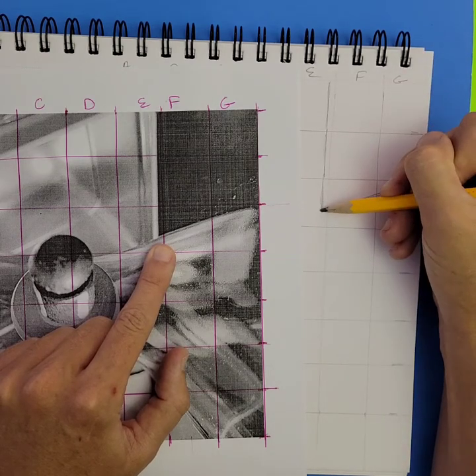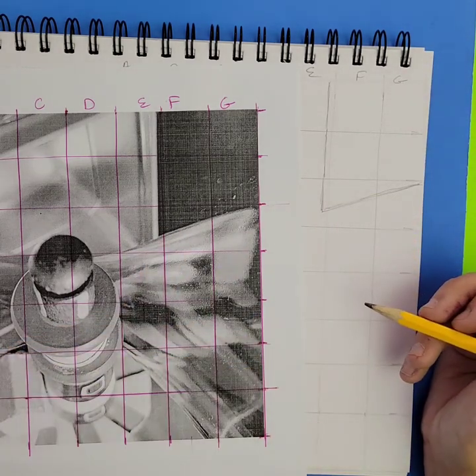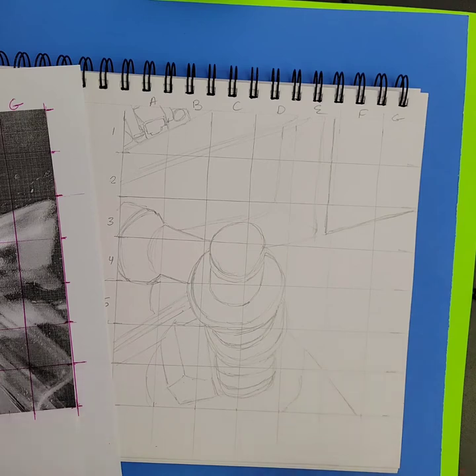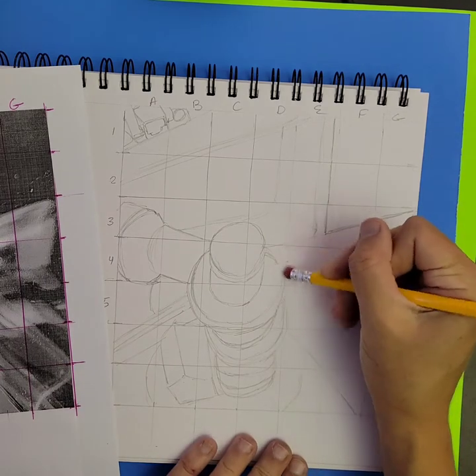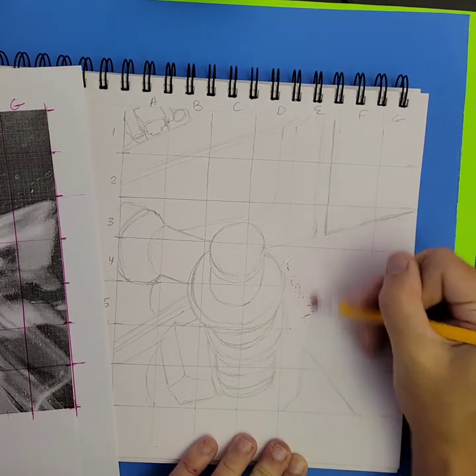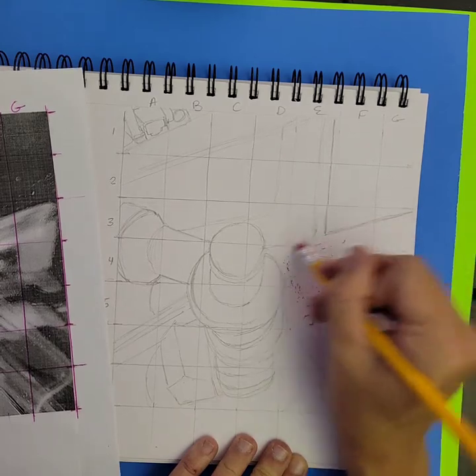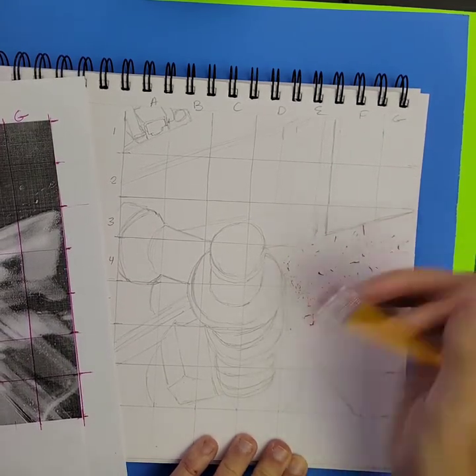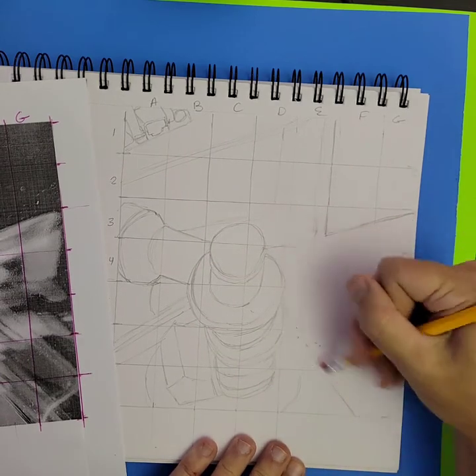So I can just start to transfer the contours of the drawing over to my paper. Now that I've transferred the contours of the image, I'm going to go in and carefully erase away all of the grid lines before I start to add any shading or color or paint to any of the rest of this image.